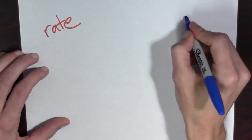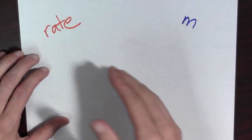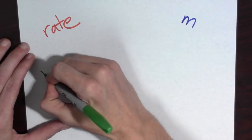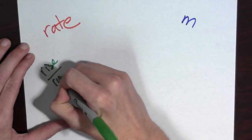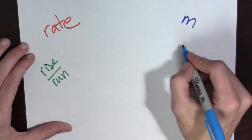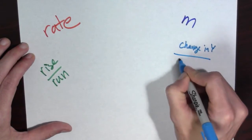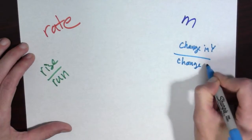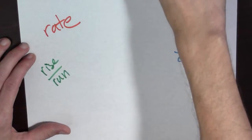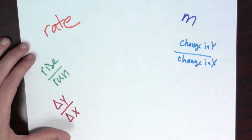Slope is also m in the formula for a line, y equals mx plus b. Slope is also rise over run. Slope is also change in y over change in x. Slope is also, if you want to be more fancy, it's delta y over delta x.